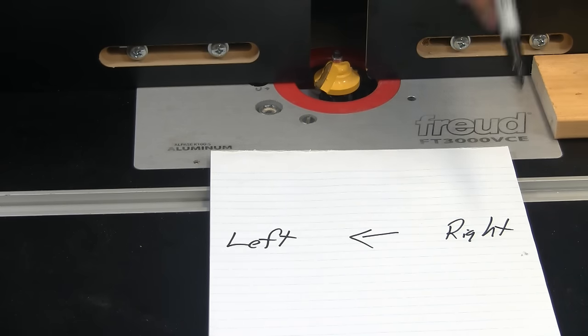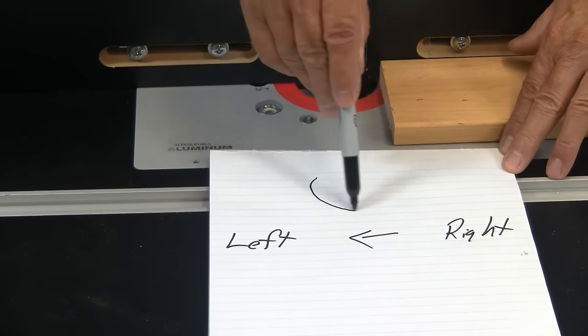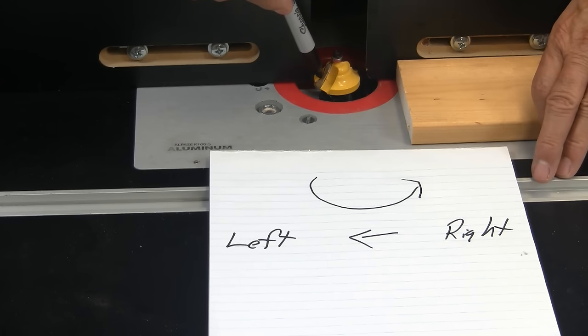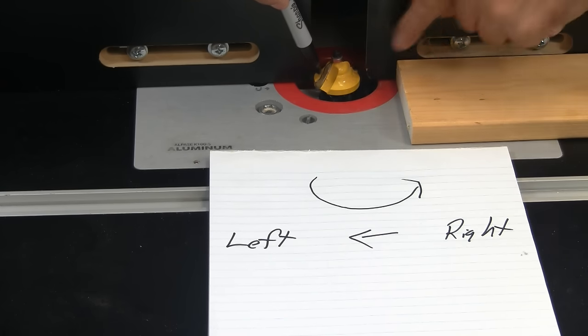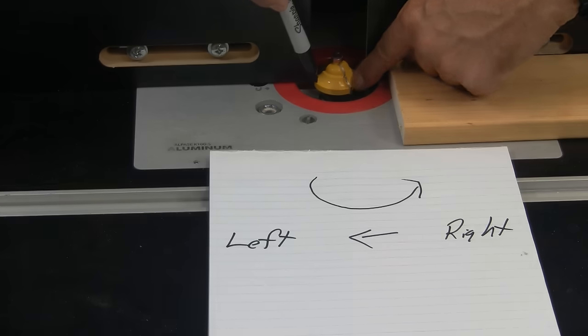We always feed wood from right to left, because the bit is spinning in that direction, and remember, the face always bites the wood. There's the face, and that would be biting the wood.